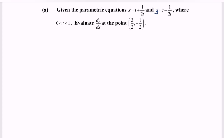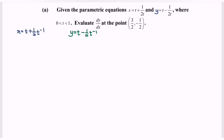Given the parametric equations where x equals t plus 1 over 2 t to the power negative 1, and y equals t minus 1 over 2 t to the power negative 1, where t is greater than 0 and less than 1. Evaluate dy/dx at the point x equals 3 over 2 and y equals negative 1 over 2.